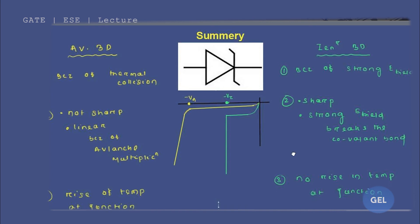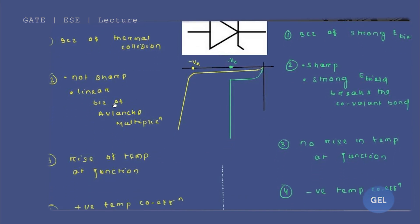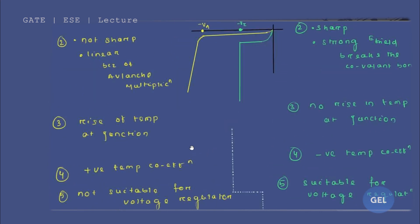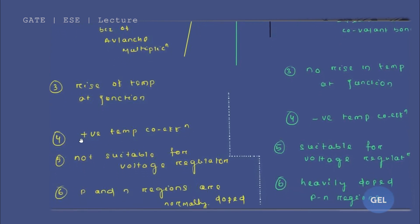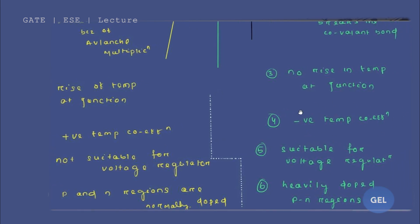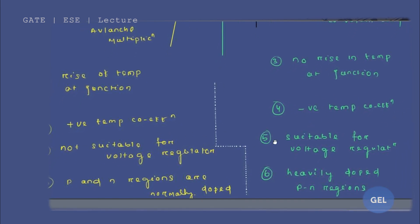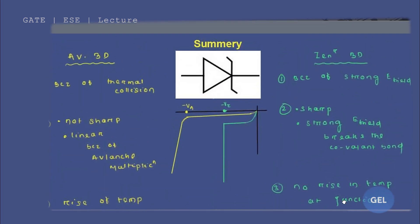Avalanche breakdown happens due to thermal collision, while Zener breakdown happens due to a strong electric field. In avalanche breakdown, heat is involved, so there is a rise in temperature at the junction. But in Zener breakdown, there is no rise in temperature at the junction. Avalanche diode has a positive temperature coefficient; Zener diode has a negative temperature coefficient. For voltage regulator applications, Zener breakdown is preferred. In avalanche diodes, the P and N regions are normally doped, but in Zener diodes they are heavily doped, giving a very narrow depletion width W and thus a very strong effective electric field.